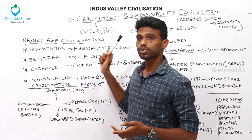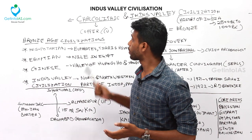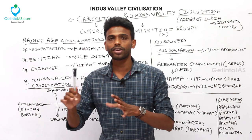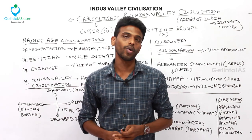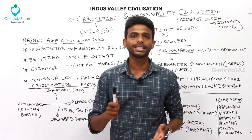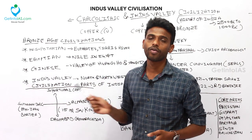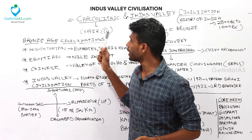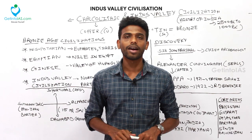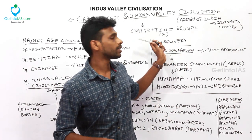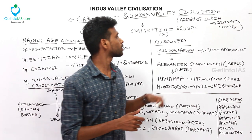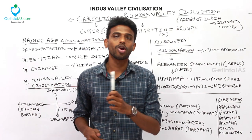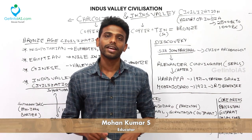Before the Indus Valley Civilization started, there was a period called the Chalcolithic period, or the Metal Age. People started to migrate to different places in search of metal ores. One such metal was copper, and that period was known as the Chalcolithic period. By the end of the Chalcolithic period, people learned the art of using copper with tin, which gave bronze, and this period was termed the Bronze Age civilization.